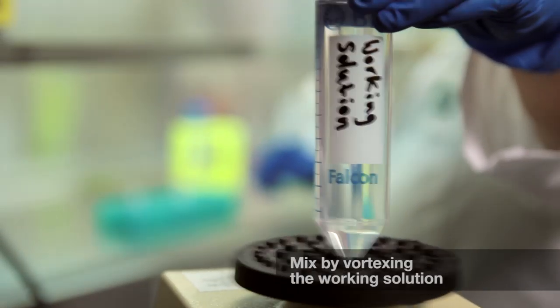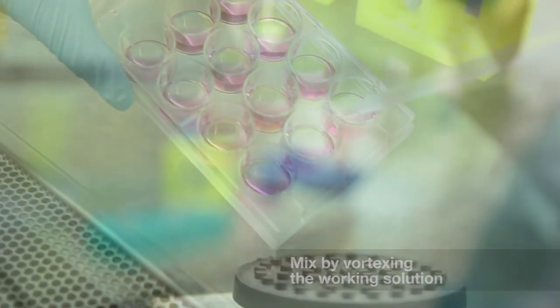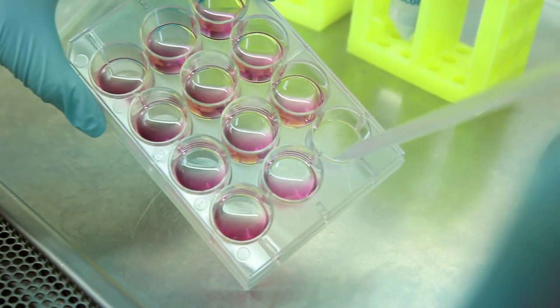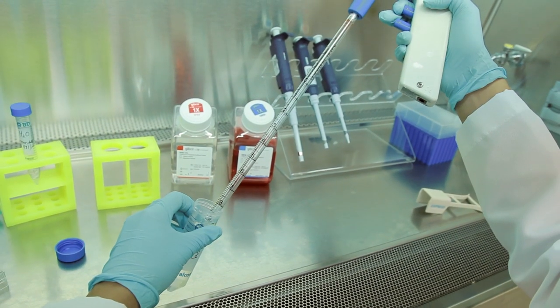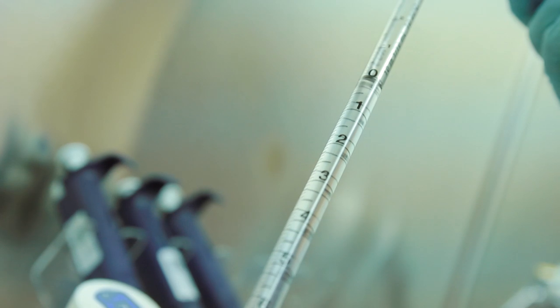Mix by vortexing and set the solution aside. Next, take your sample and aspirate the PBS buffer from each well. Then, add 2 ml of the working solution to each well.